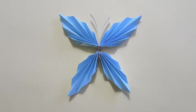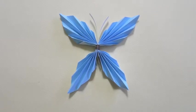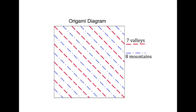Let's be creative making origami art using the valley and mountain fold. Look at this diagram. It has alternating valleys and mountains at equal distance. Seven valleys and eight mountains.